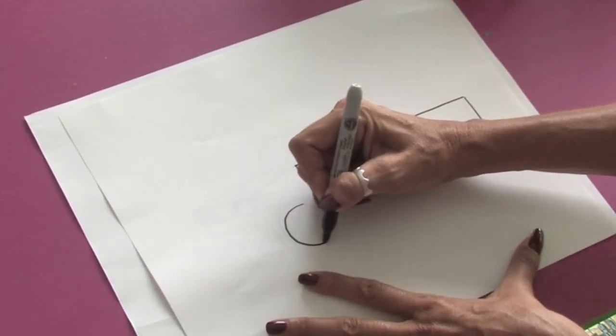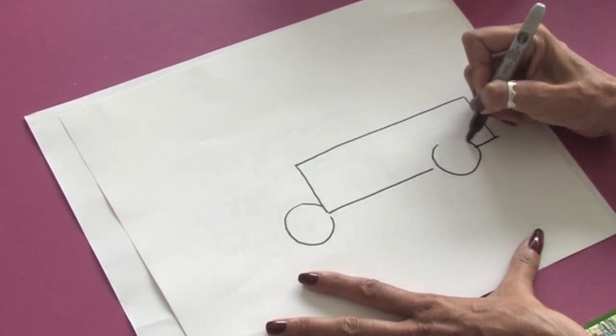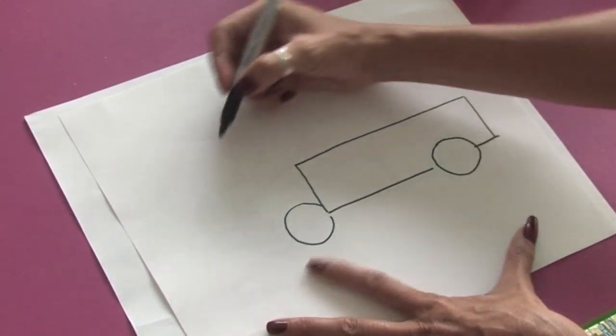The wheels are just going to be very basic circles, and we can always go in later and add in more detail.